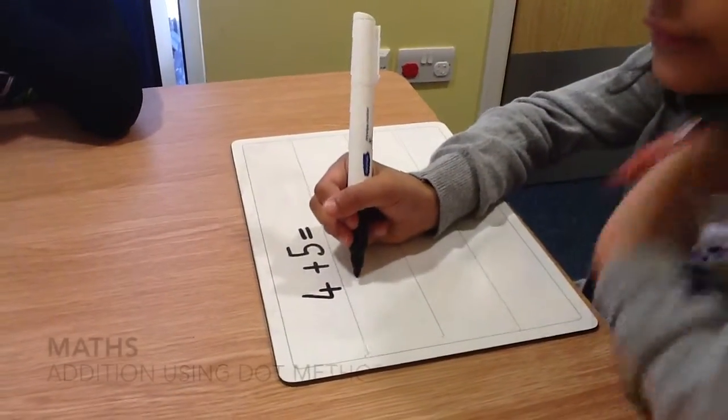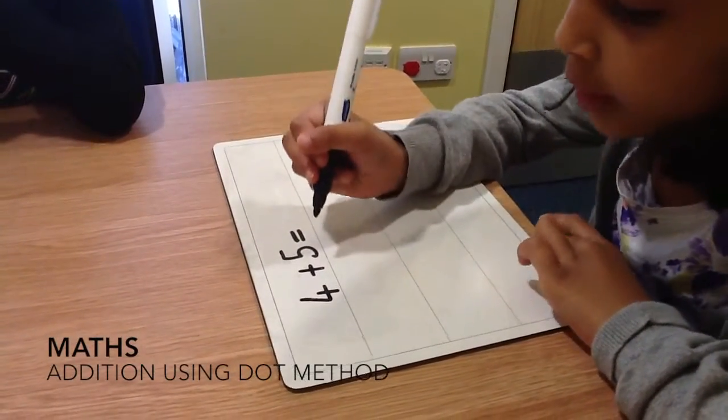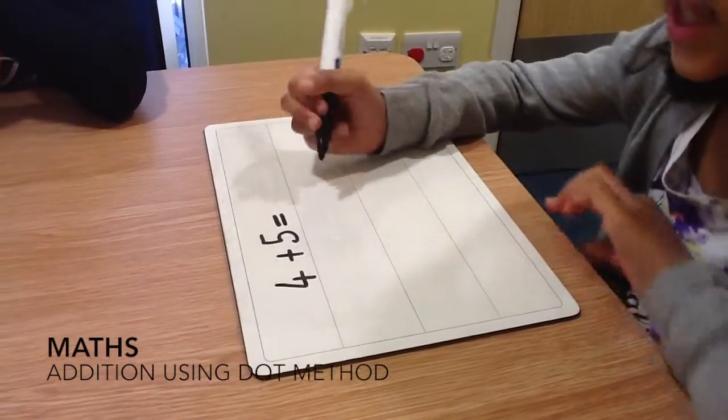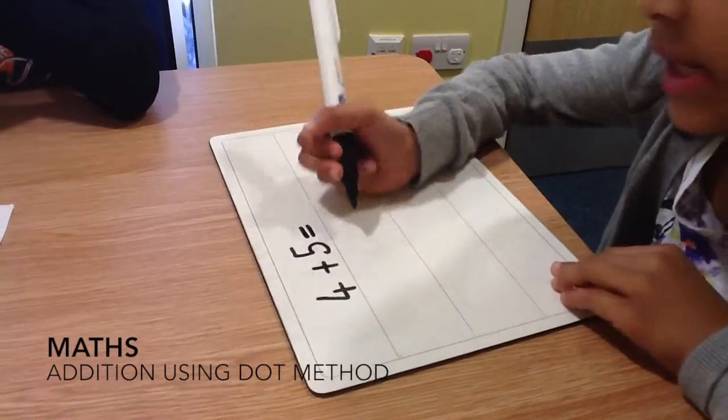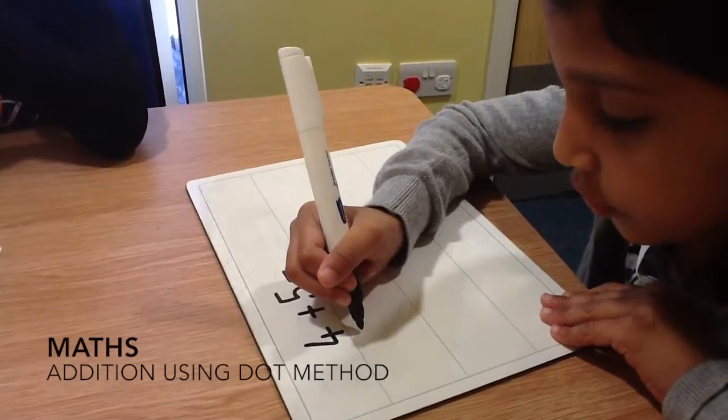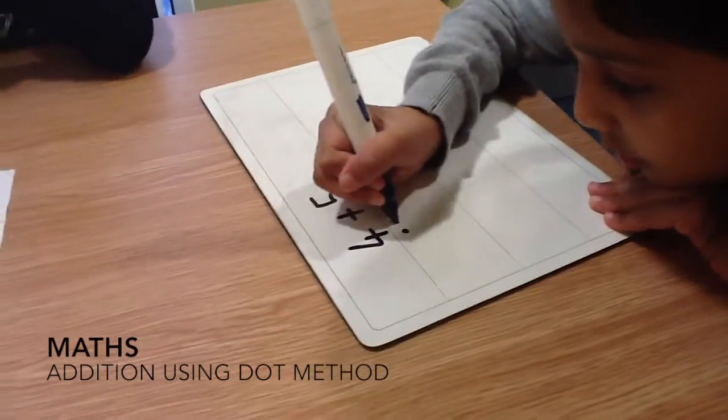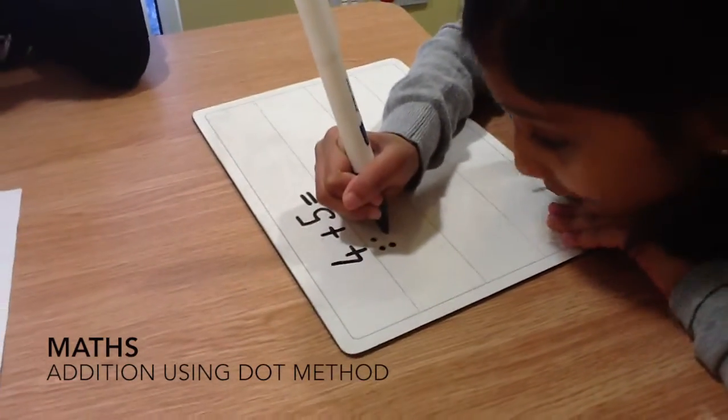First, you have to look at the number which is first in the number sentence. It's four, so we do four dots. One, two, three, four.